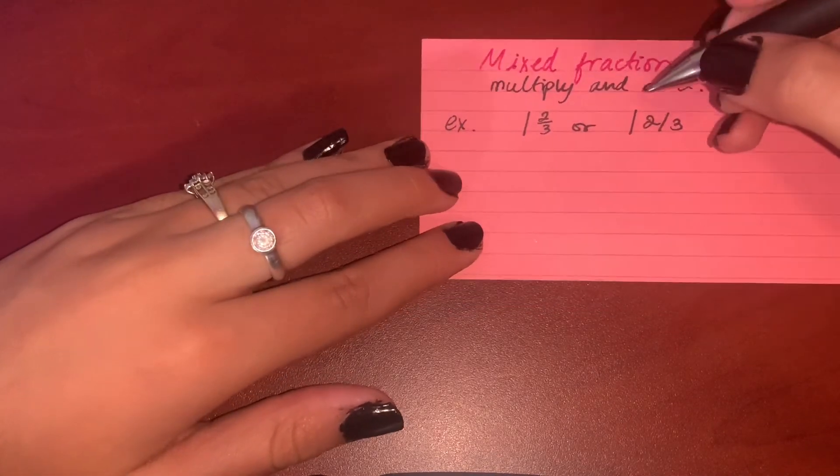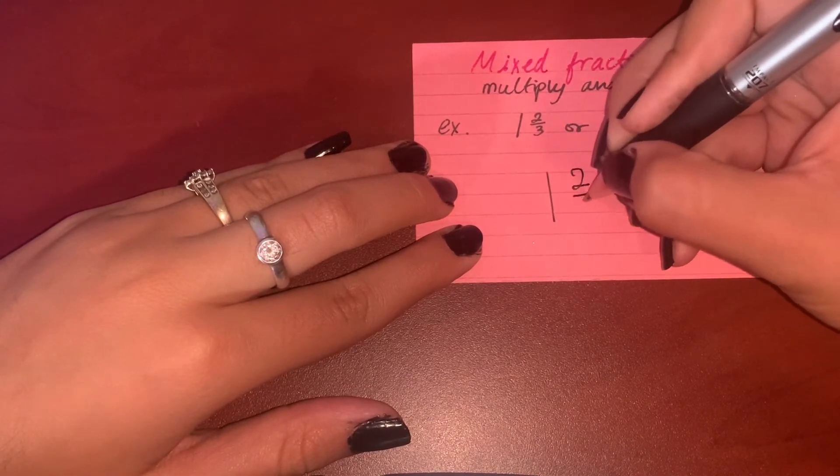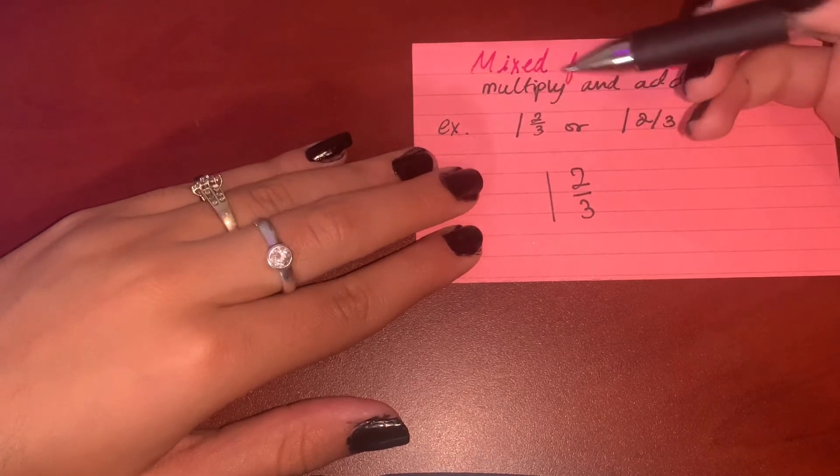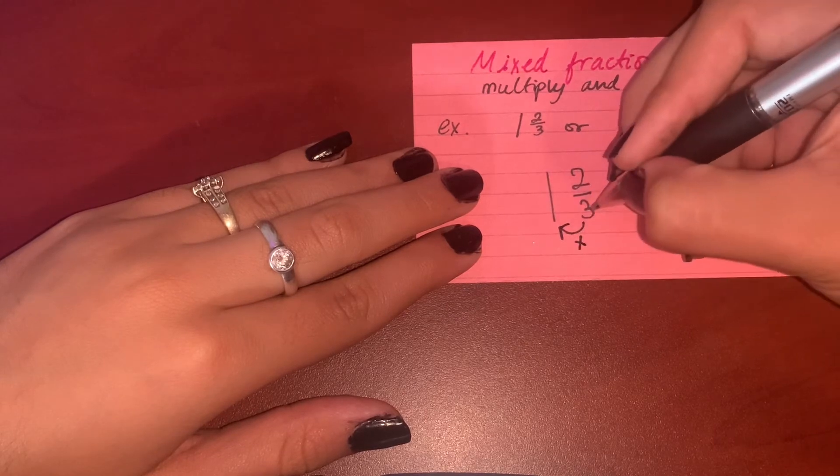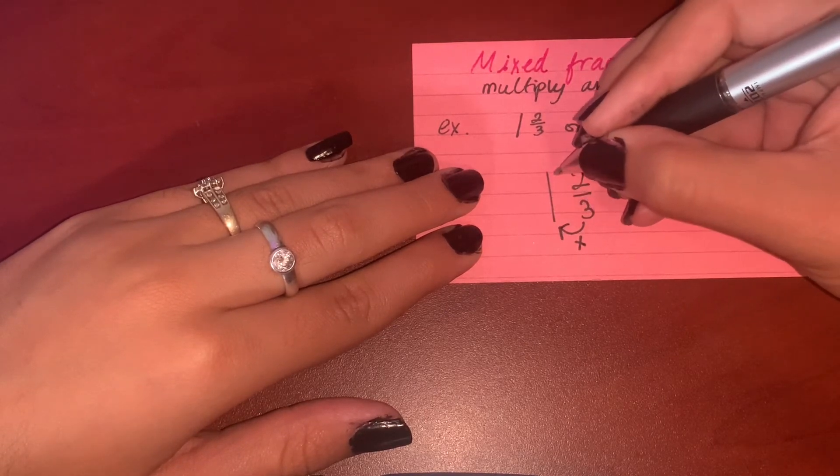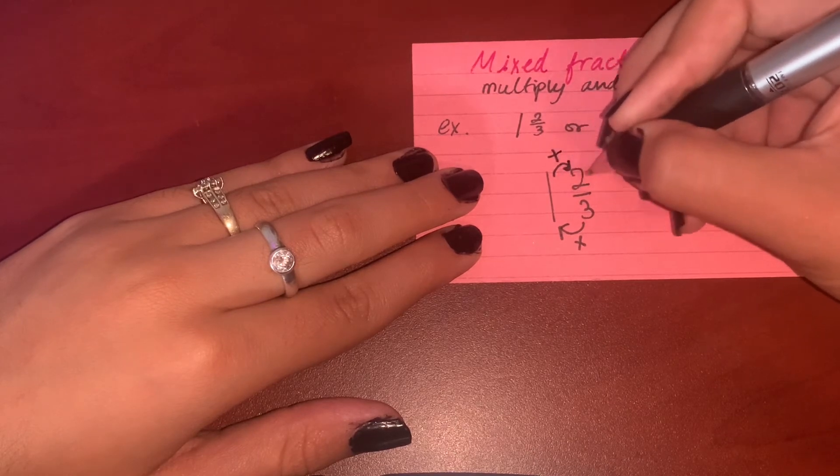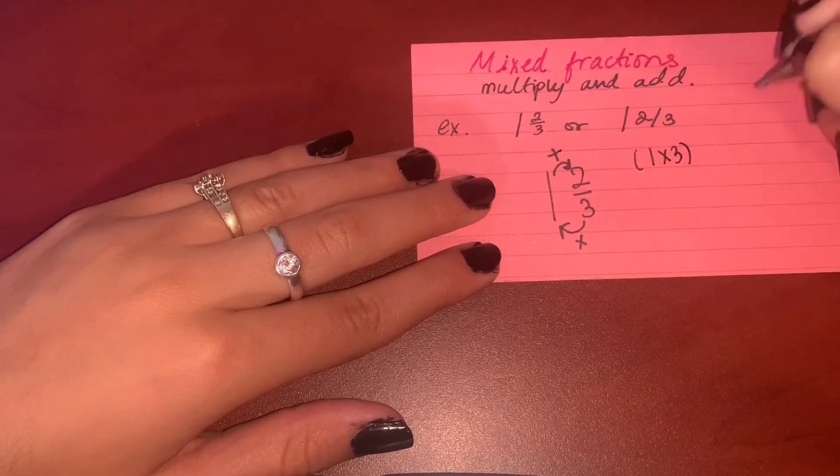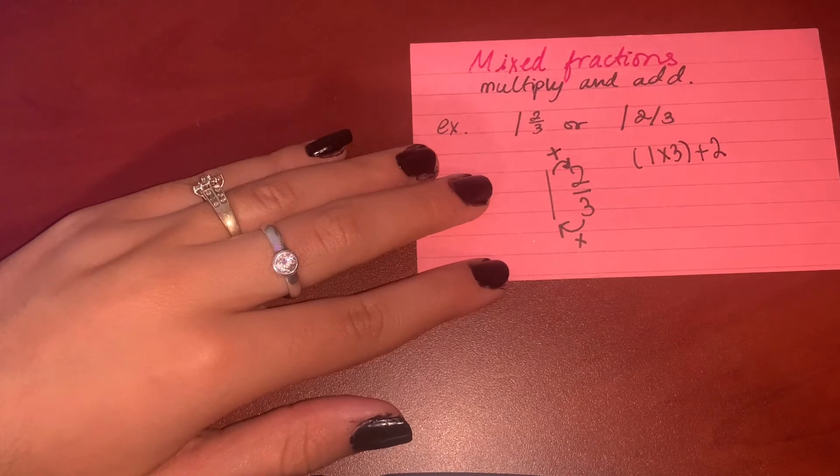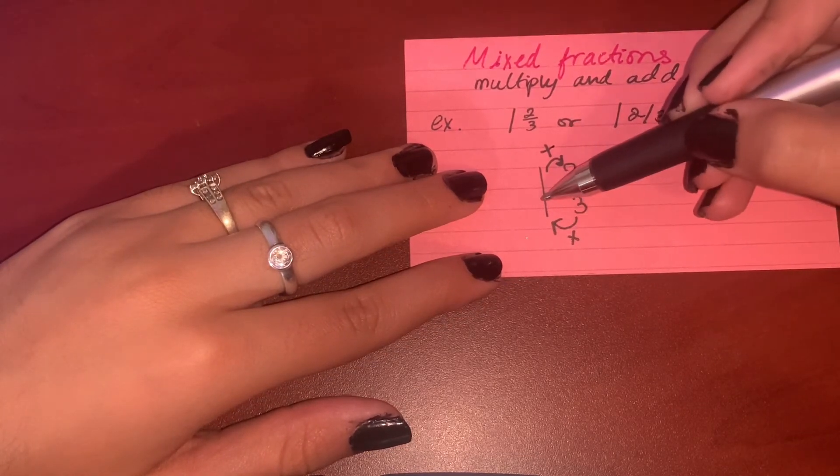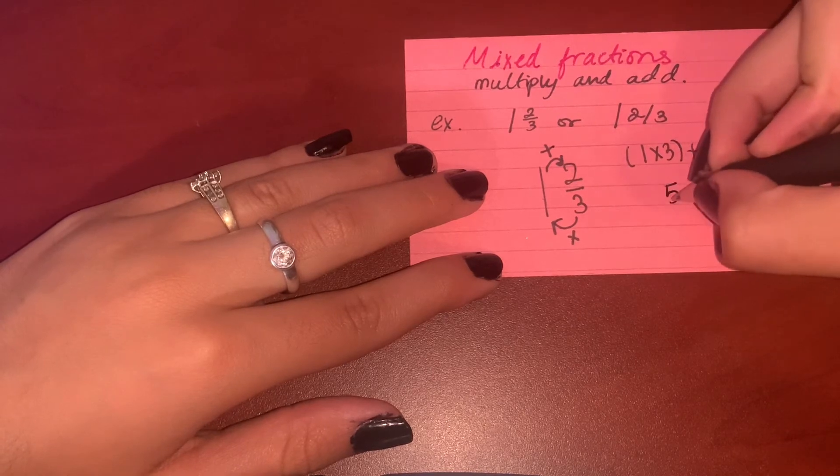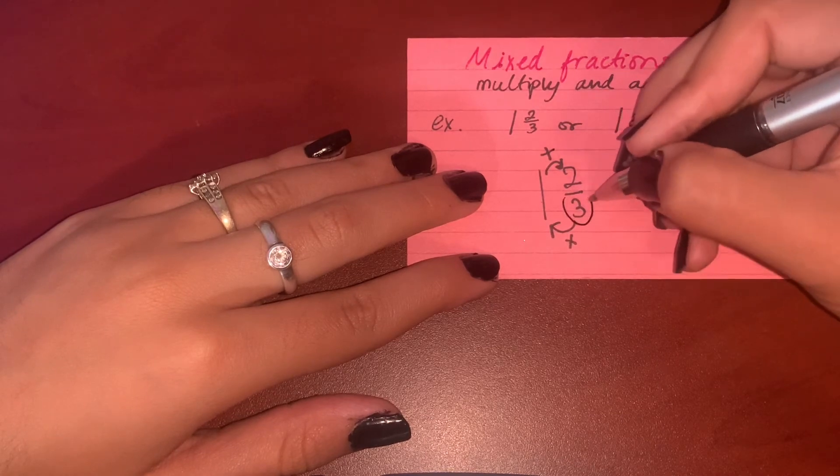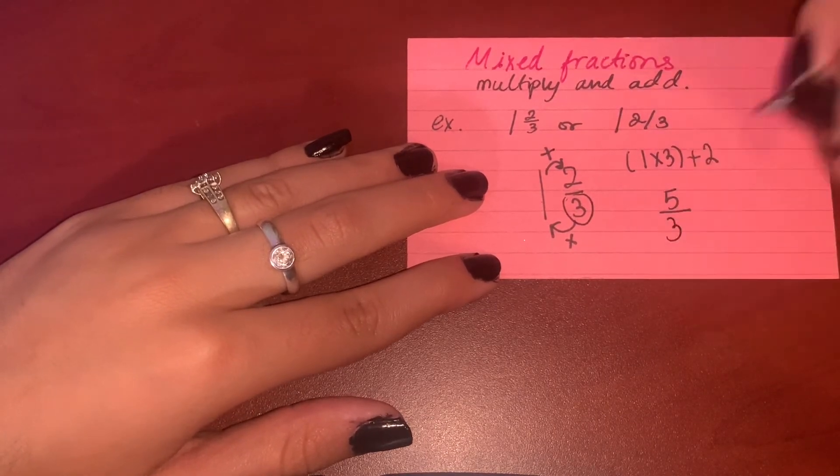So what do you have to do? So you have 1 and 2 over 3. So it says first you're gonna multiply—that means you're gonna multiply 3 multiplied by 1 and then add it to the 2. So you're saying that one multiplied by three first, and then add two for the numerator. So 3 multiplied by 1 is 3, plus 2 is 5. Five, that's the numerator. The denominator is this one right here; it's gonna be the same, so you put 3. That's it.